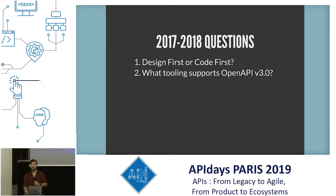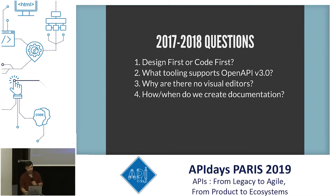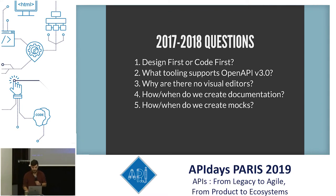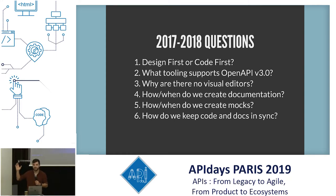Should we use OpenAPI 2 or 3? Why are there no visual editors? Why do we have to write all this YAML by hand? That sounds annoying. How and when do we create documentation from that? And the most important question is when you've done all of this work, how do you then keep the code and the docs in sync? Put your hands up if this is a problem for you — everyone, right?